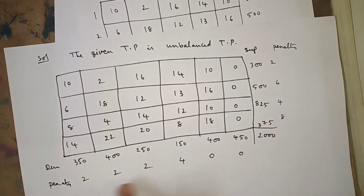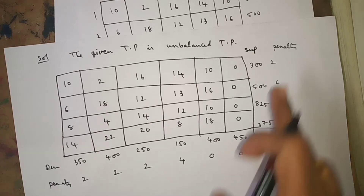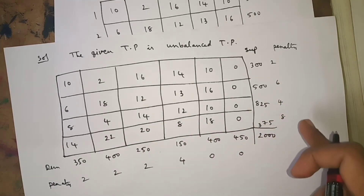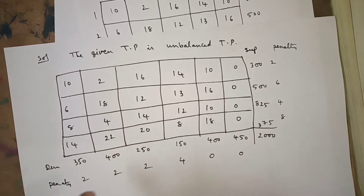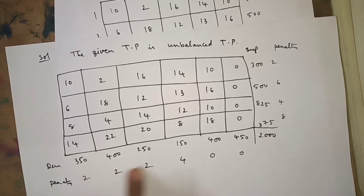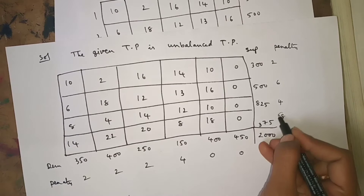After finding all penalties — enter into each column and find the difference between the two least numbers, do this for every row and every column. Then identify the highest penalty. The penalties are 2, 6, 4, 8, 2, 2, 2, 4, 0. The highest penalty is 8. Round off this one.